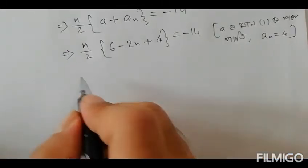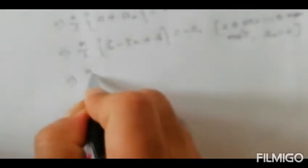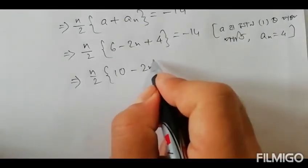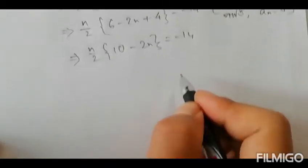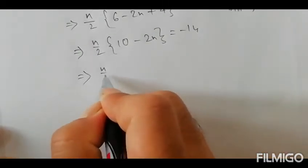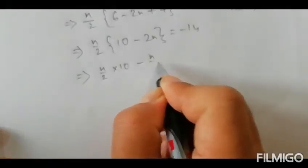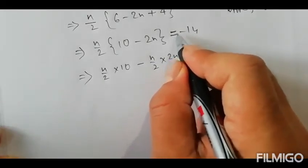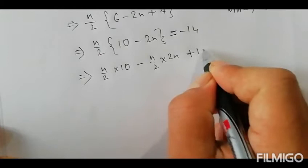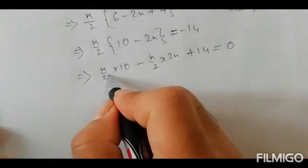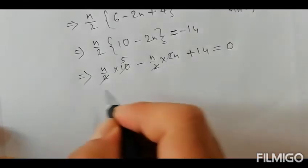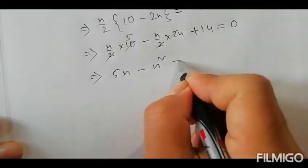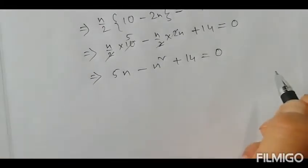Simplifying, 5n minus n squared equals minus 14. Rearranging gives us n squared minus 5n minus 14 equals 0. This is a quadratic equation.